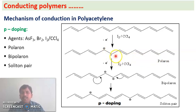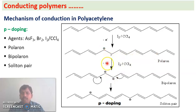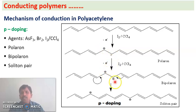In the second step, the polaron is treated with iodine and CCl4 again, and one more electron is removed. Previously we had a radical cation (polaron); now this remaining electron is also removed, giving two positive charges on the chain. This species with two positive charges is called a bipolaron.